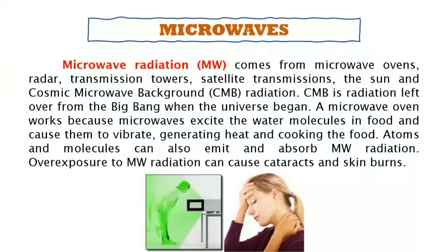Microwave radiation comes from microwave ovens, radar transmission towers, satellite transmissions, the sun, and cosmic microwave background radiation (CMB) — radiation left over from the Big Bang when the universe began. A microwave oven works because microwaves excite the water molecules in food and cause them to vibrate, generating heat and cooking the food. Atoms and molecules can also emit and absorb microwave radiation. Overexposure to microwave radiation can cause cataracts and skin burns.